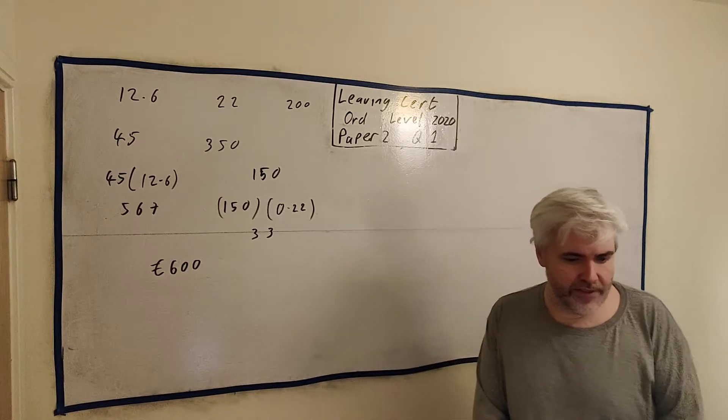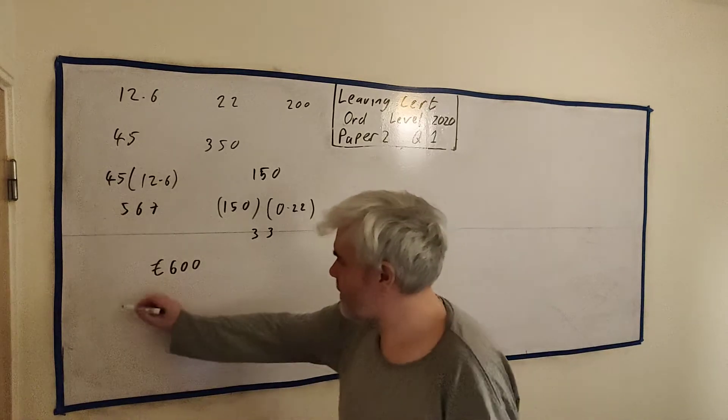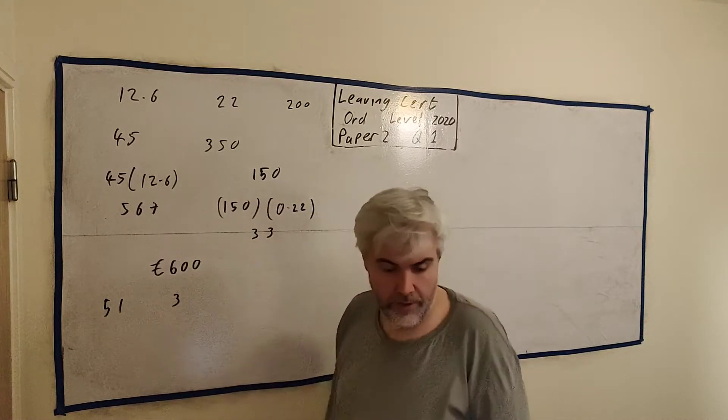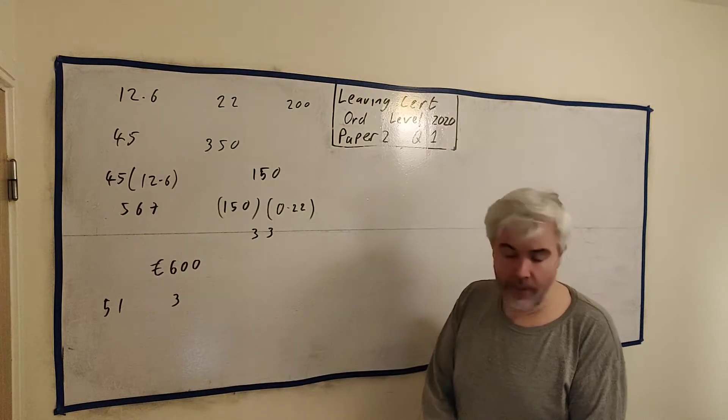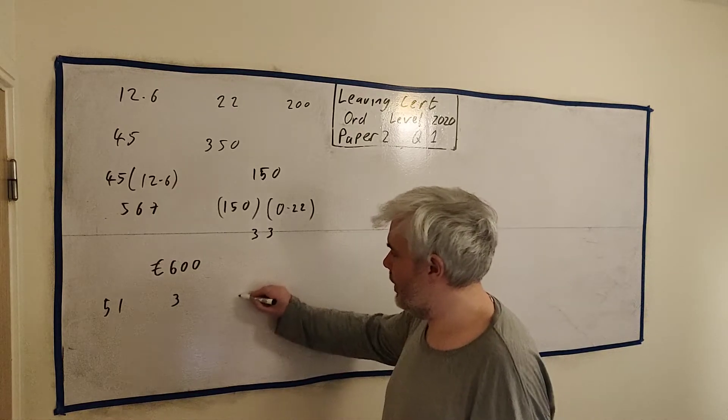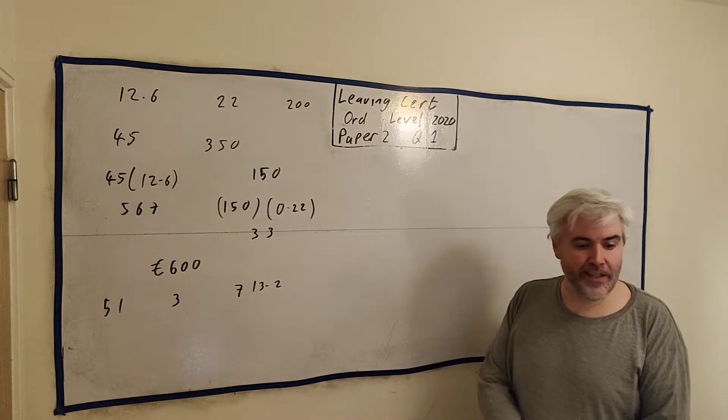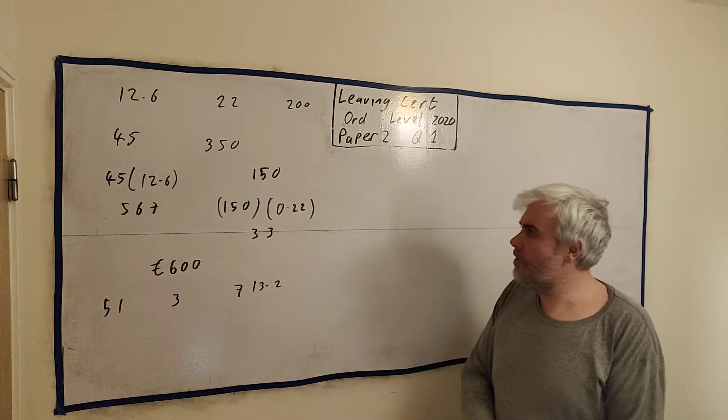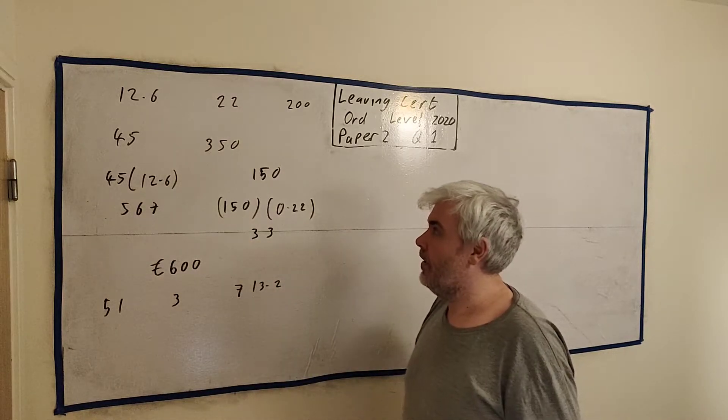Part two of the question says the following week, the next week, he works 51 hours. 51 hours includes three hours on a Sunday. Because Sundays you earn extra - he earns one and a half times his basic wage. Then they tell us his gross pay that week was €713.20. Find the amount of sales John made in this week. So they want to know this number here, like the €350 in the previous question.